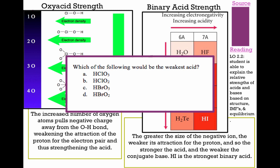For the question asking which is the weakest acid: the weakest acid first is the one with fewer oxygens, which eliminates A and C. Now between B and D, we look at which atom — Cl or Br — has the weaker bond. Bromine is the bigger atom, so the bond is weaker, meaning HBrO2 is actually the weakest acid here.